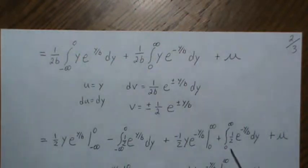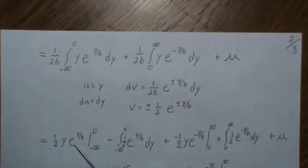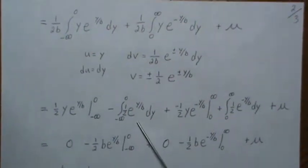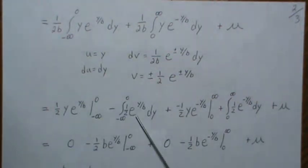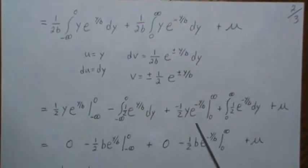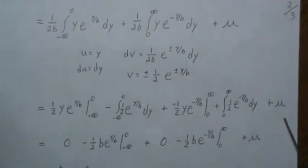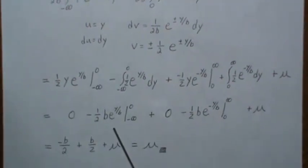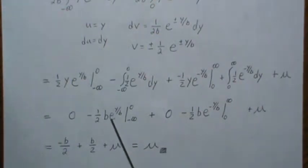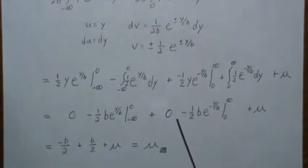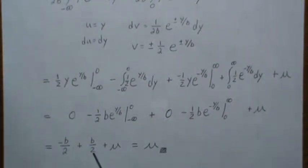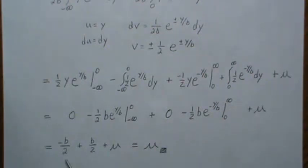Plugging in zero gives zero, and plugging in negative infinity — that term dominates and goes to zero. Evaluating at the limits of integration: zero gives zero, and integrating gives the remaining piece. Carrying the plus mu along: plugging in zero gives one, so we get negative b over two. For the other piece, plugging in infinity gives zero, and plugging in zero gives positive b over two. Those cancel, leaving just mu. So the mean is mu.